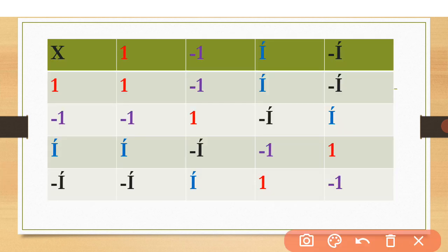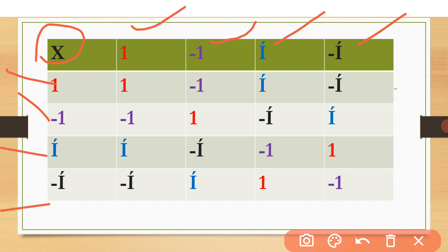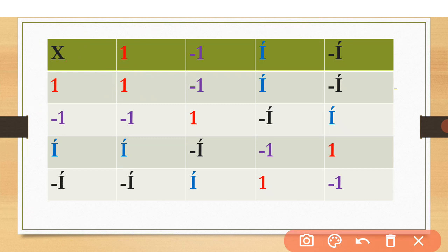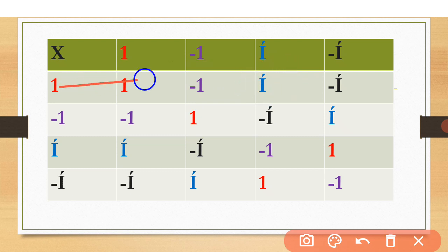Let's make the table. We place the multiplication sign, and in the row we write all elements: 1, -1, i, and -i. In the column as well: 1, -1, i, and -i. When we multiply 1 by 1, the answer is 1. When 1 is multiplied by -1, the answer is -1. When 1 is multiplied by i, the answer is i. And when 1 is multiplied by -i, the answer is -i.